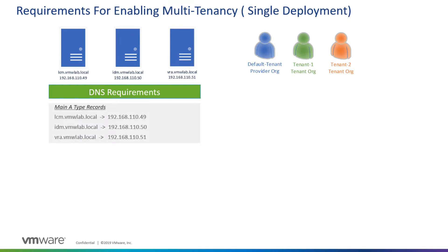Every deployment of VRA will need A-type records. This represents the main A-type records needed even before you start the deployment: an FQDN for LCM, an FQDN for IDM, and an FQDN for VRA representing the hostname for these appliances and their respective IP addresses.